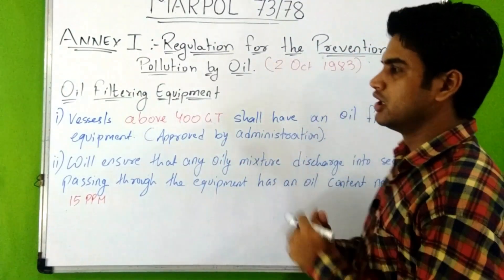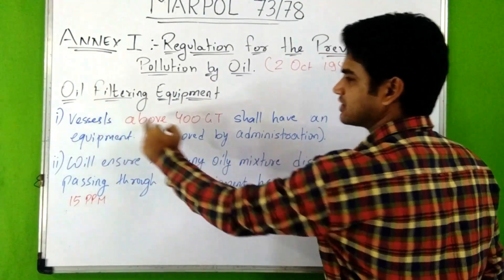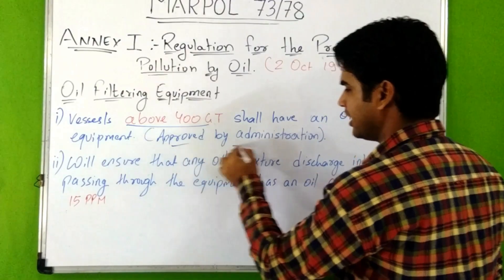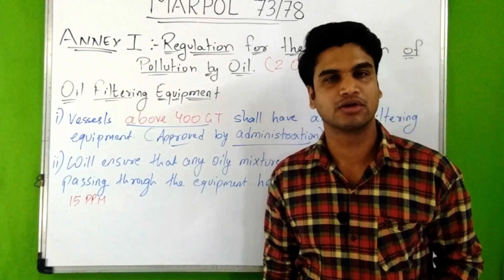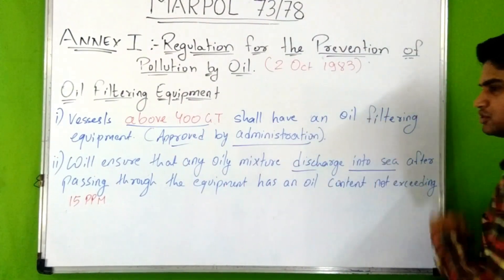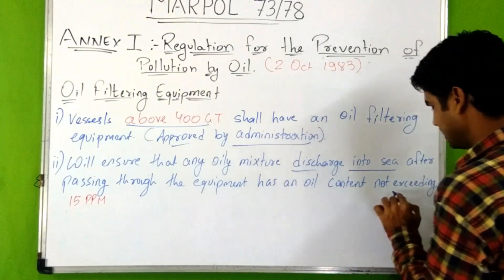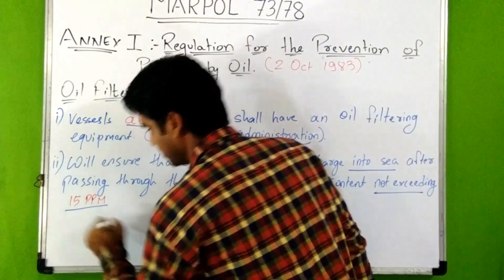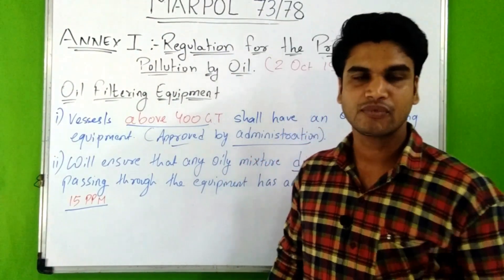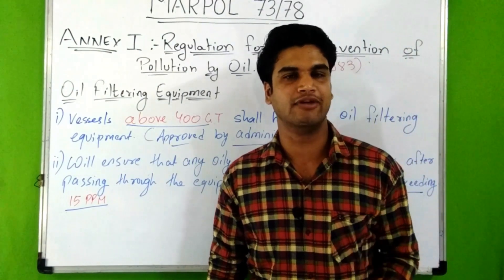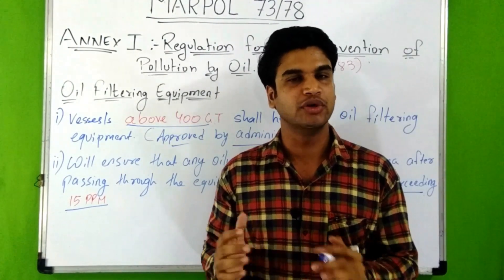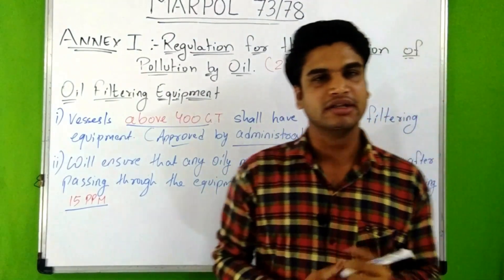Before discussing discharge criteria, let's look at oil filtering equipment. According to Regulation 14 of Annex 1, every vessel above 400 gross tonnage shall have an oil filtering equipment approved by the administration, ensuring that any oily mixture discharged into the sea does not exceed 15 ppm. Vessels above 1,000 gross tonnage must also have an alarm system indicating when oily mixture exceeds 15 ppm, plus an arrangement to automatically stop discharge when oil content exceeds 15 ppm.